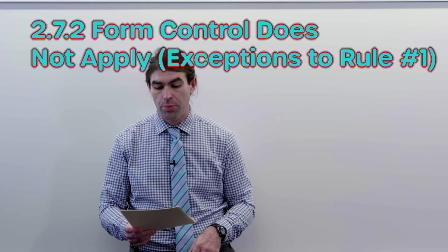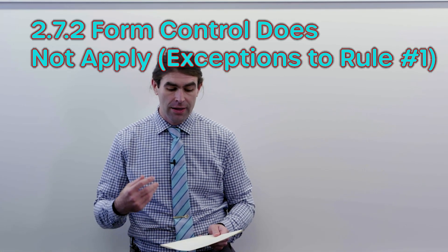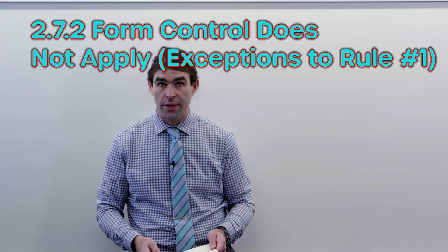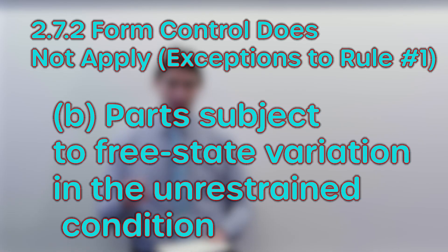Page 28, section 2.7.2, form control does not apply exceptions to rule number one. It says B, parts subject to free-state variation in the unrestrained condition.